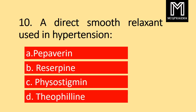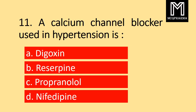Question number 10. A direct smooth muscle relaxant used in hypertension: Option A Papaverine, B Reserpine, C Physostigmine, D Theophylline. Correct answer: Option A Papaverine. Question number 11.